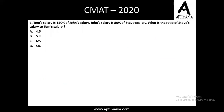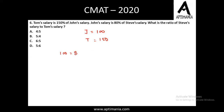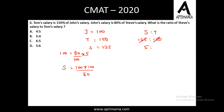Let's go ahead for question number 6, a question based on percentage. Tom's salary is 150% of John's salary. I'm assuming John's salary is 100 rupees, so Tom's salary will be 150 rupees. John's salary is 80% of Steve's salary, so 100 is 80% of Steve's salary. On solving: Steve = 100 × (100/80) = 125. They have asked for the ratio of Steve's salary to Tom's salary, that is 125 to 150. Dividing by 25, the ratio is 5 to 6. The correct answer for question number 6 is option D, that is 5 to 6.